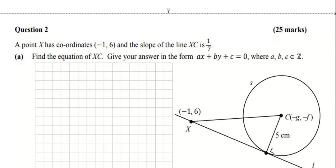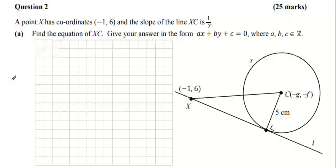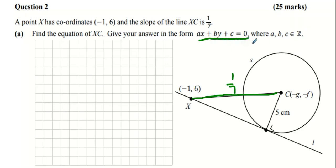The slope of line XC is one seventh. Find the equation of XC and give your answer in the form ax plus by plus c equals zero. XC is a line, so we're finding the equation of a line.